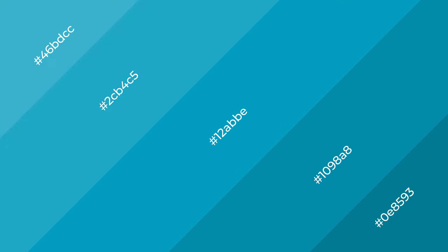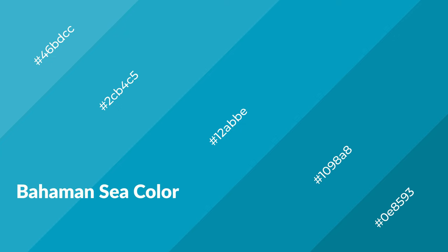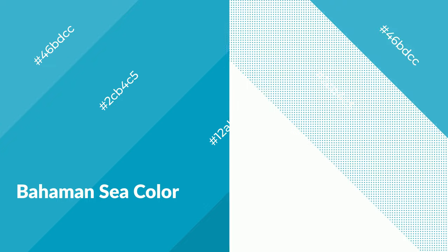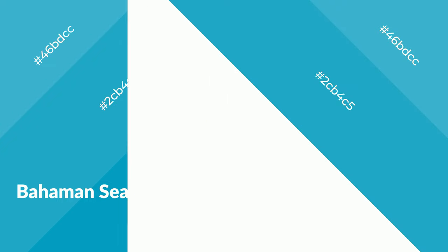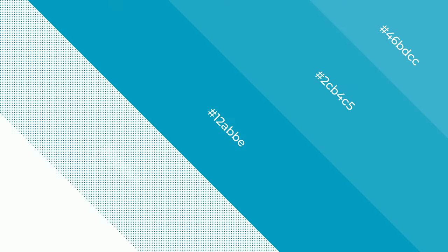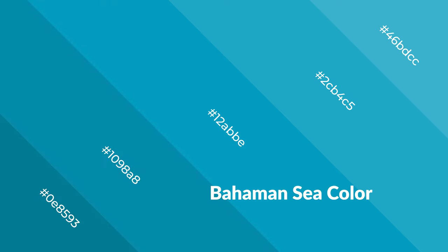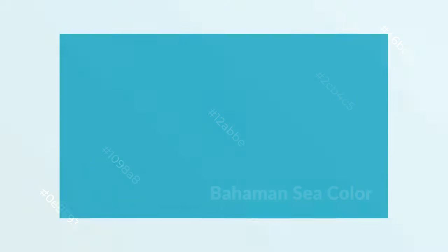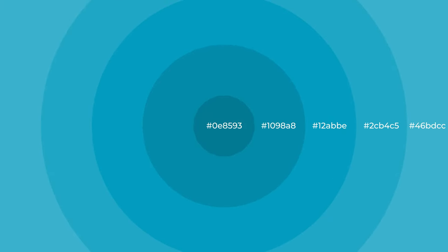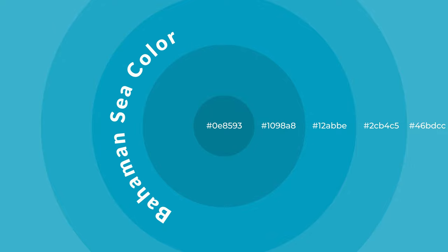Bahamian Sea is a cool color and it emits calming, serene, soothing, refreshing, spacious, unwinding, peaceful, and relaxed emotions. Cool colors are like water, ice, sky, grass, soft, and snow. You can see them used in baby products.